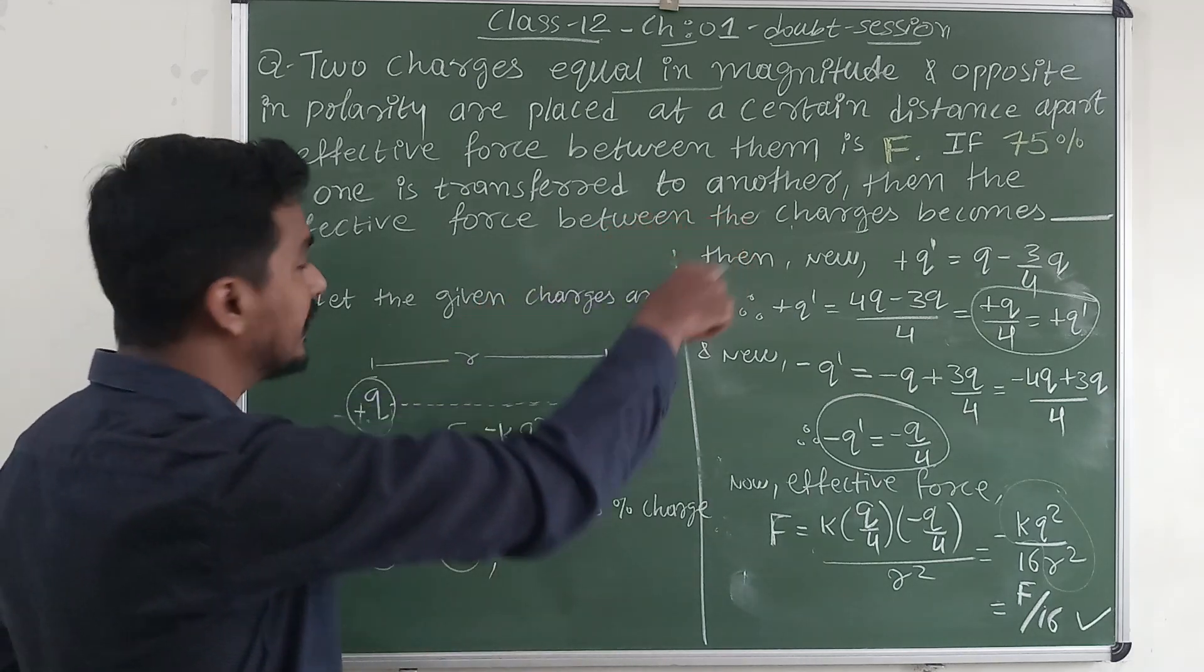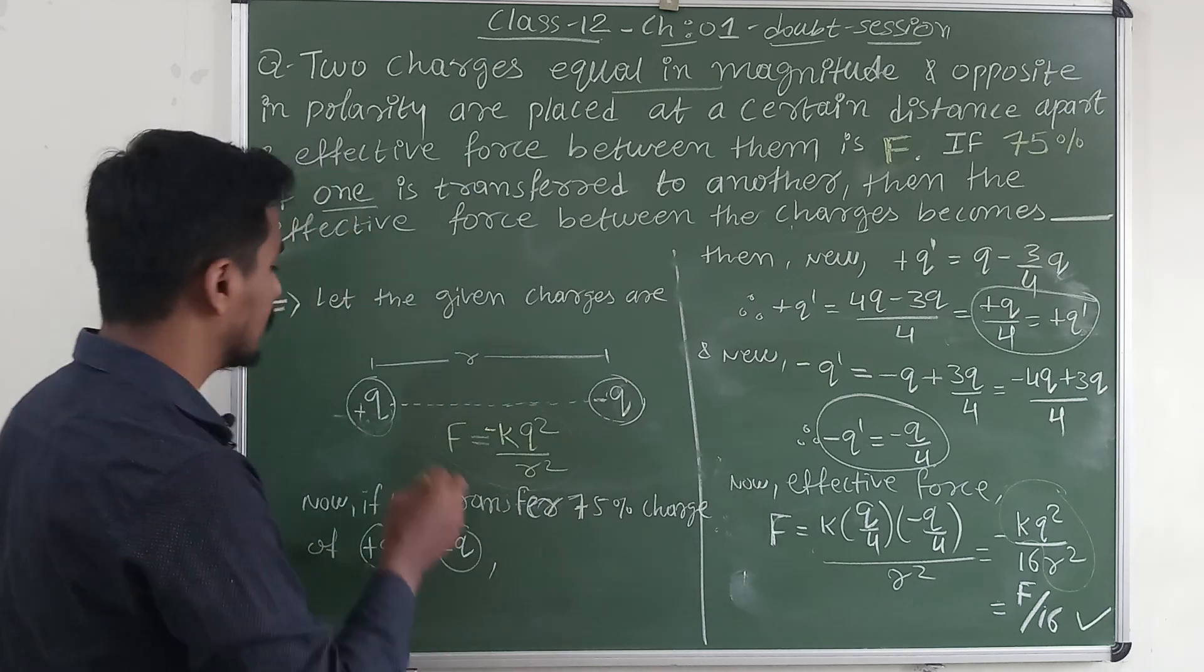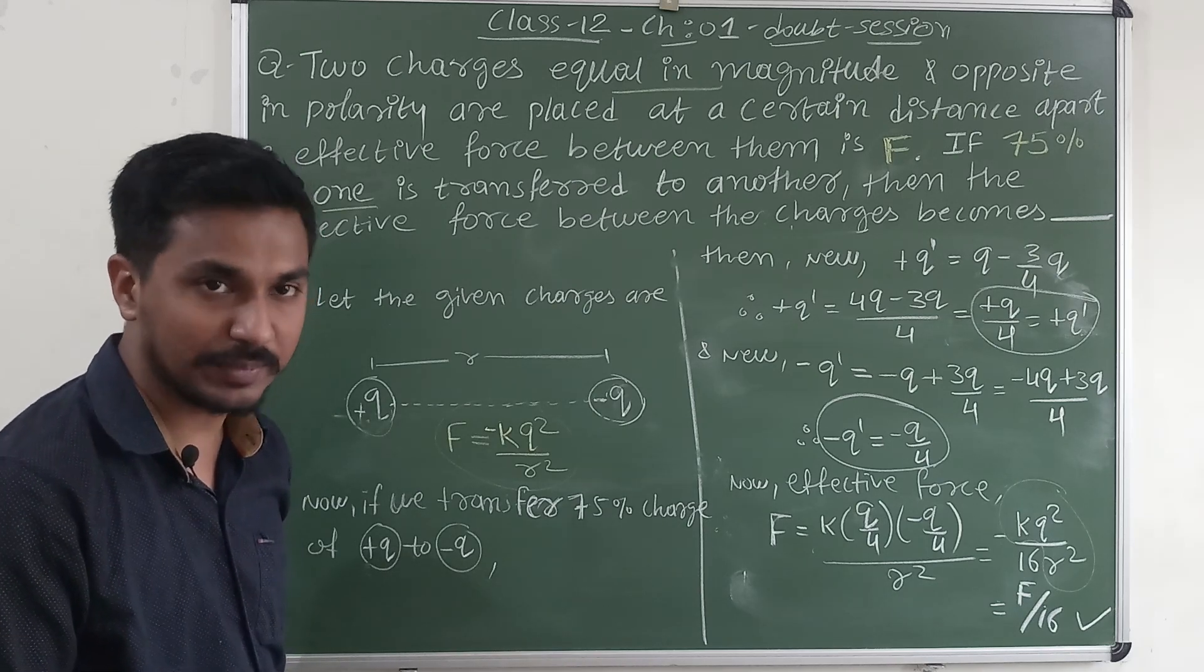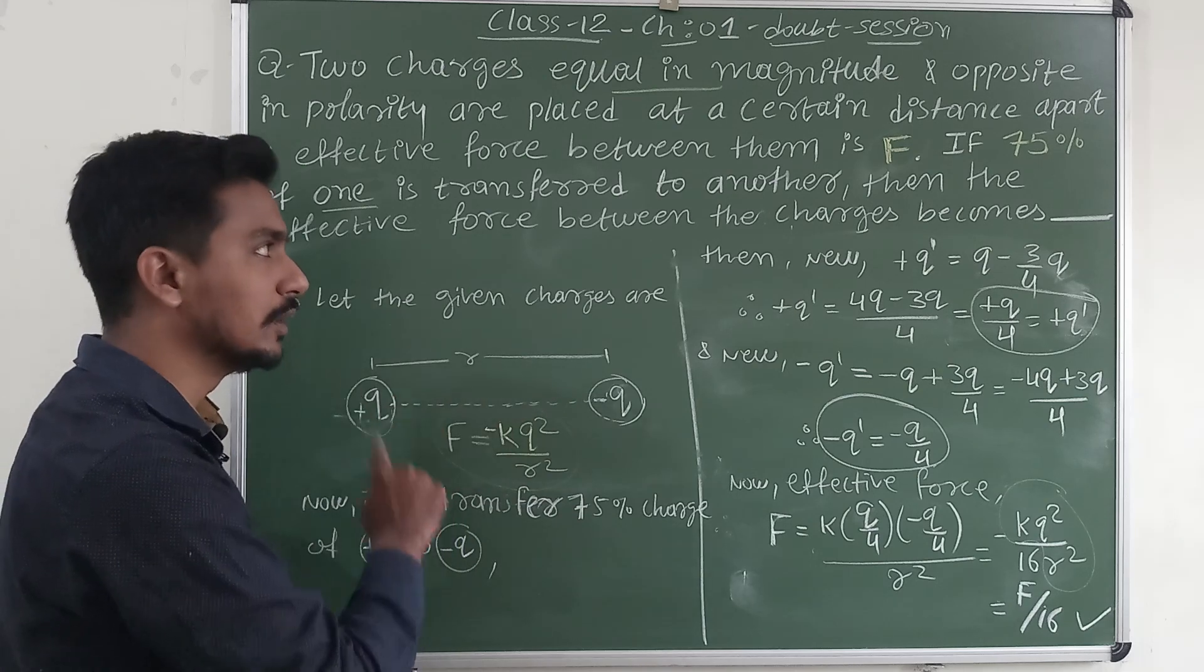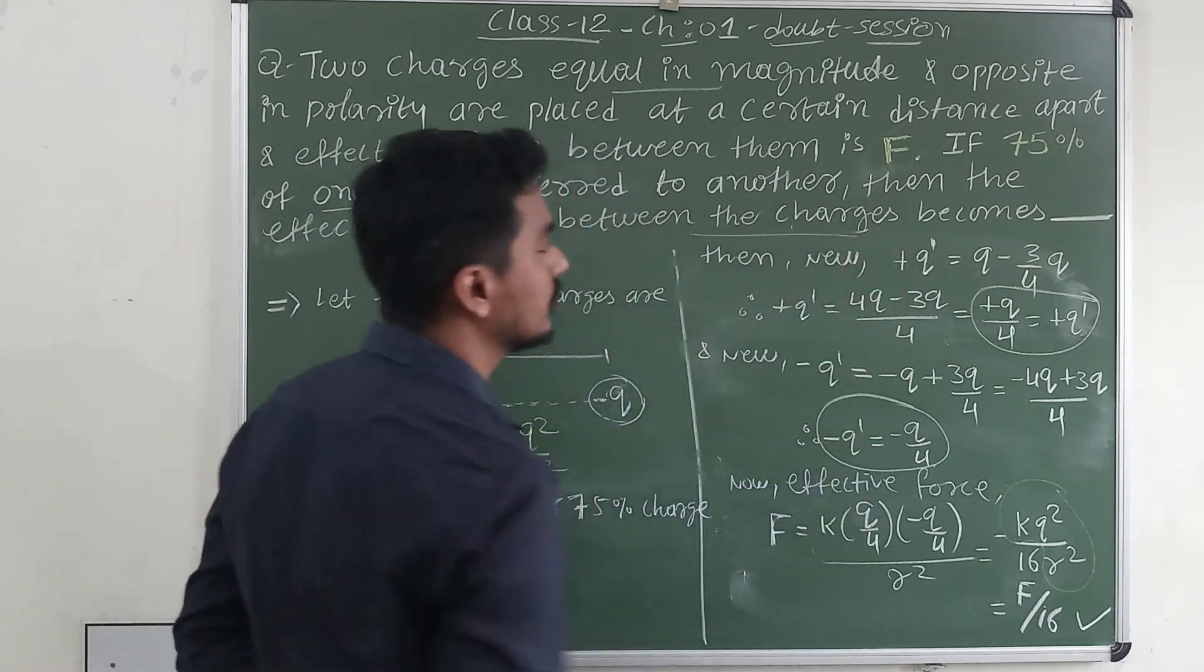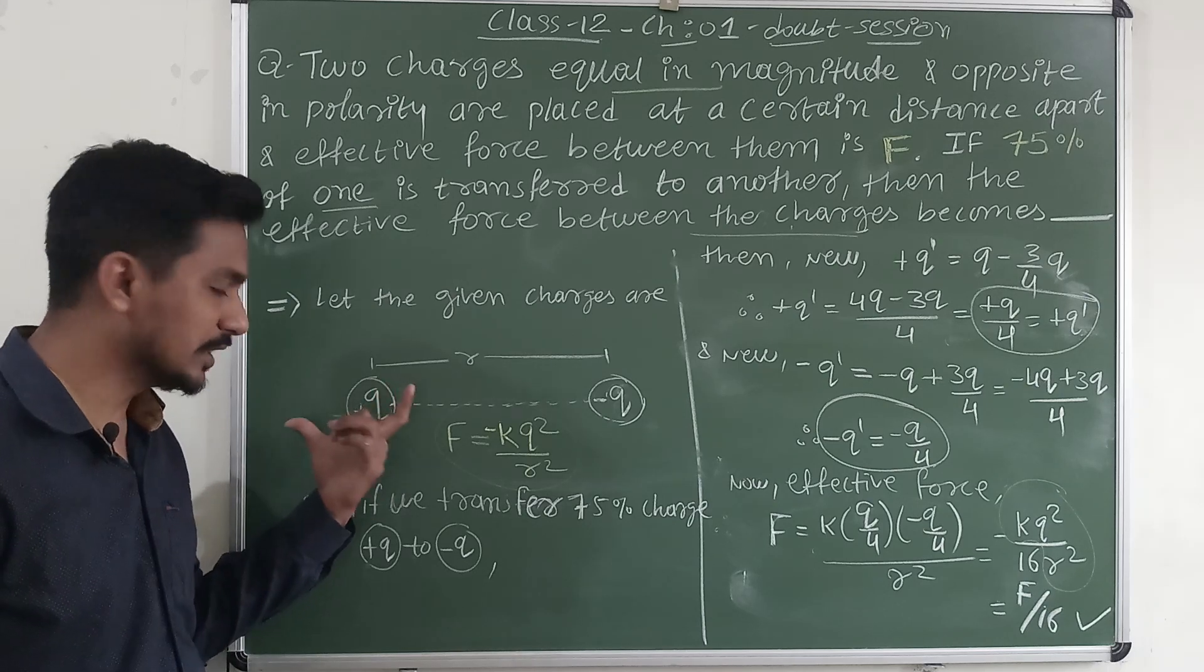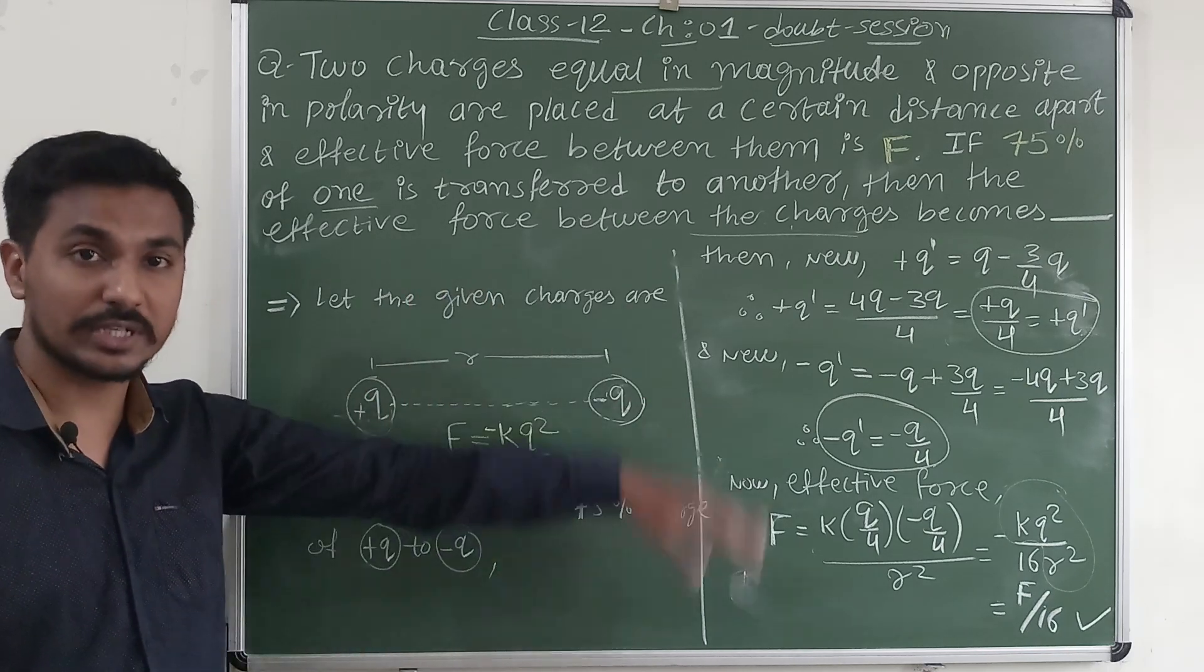If 75 percent of one is transferred to another, it means from one we have to transfer the charge to another, but how much? 75 percent, either from plus charge to minus or minus to plus. Then the effective force between them we have to find. Let us assume that we are transferring the 75 percent charge from positive charge to negative, that is we are transferring the positive charge.